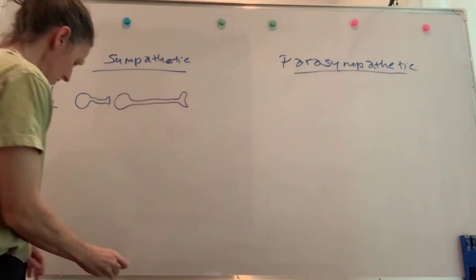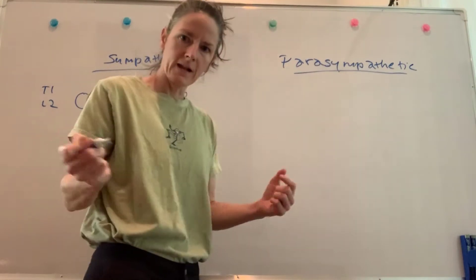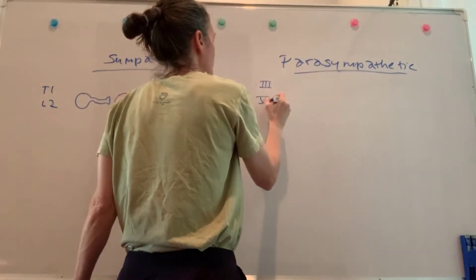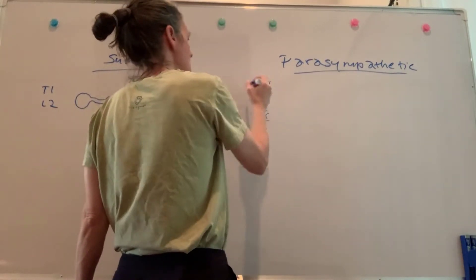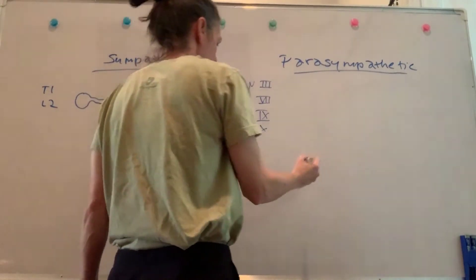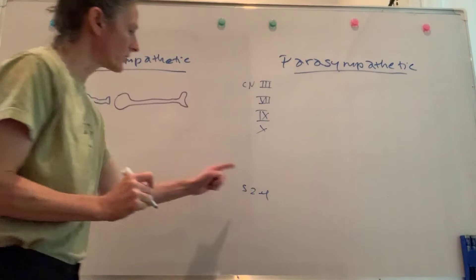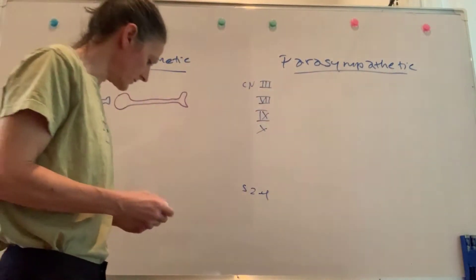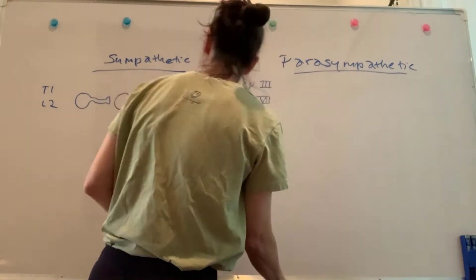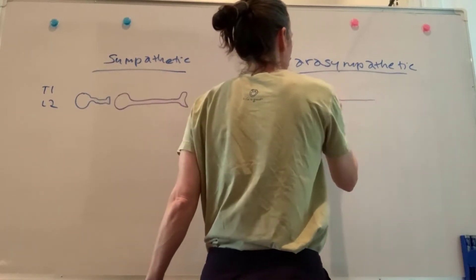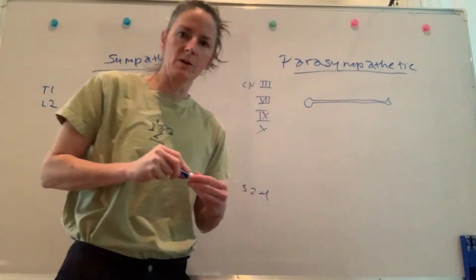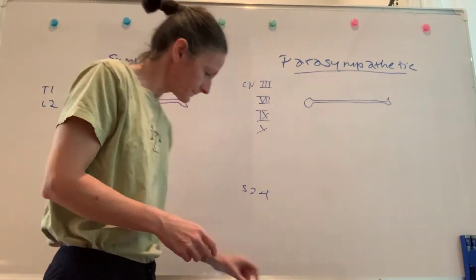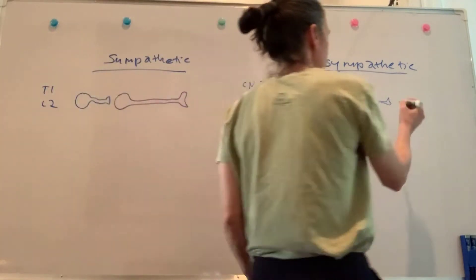In the parasympathetic division, pre-ganglionic neurons arise from brainstem nuclei associated with cranial nerves 3, 7, 9, and 10, as well as sacral segments S2 through S4 — hence the name difference: thoracolumbar versus craniosacral. The pre-ganglionic fibers are usually quite long and synapse on targets far away. These targets are called intramural because they're embedded in the walls of the organ, or very close to it, making post-ganglionic fibers very short.